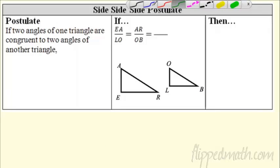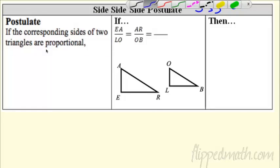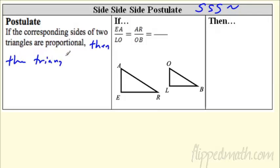Fantastic. Last one. There's only 3 of these, so that's good for us. Last one is the side side side postulate. There it is. So we can kind of fill this in. If the corresponding sides of 2 triangles are proportional, then we can say, I bet you guessed it, the triangles are similar.